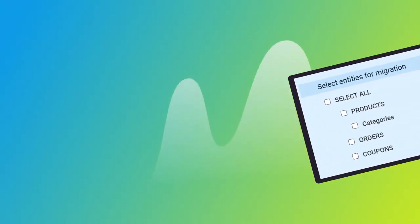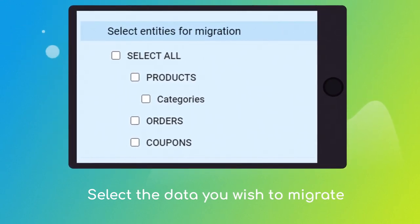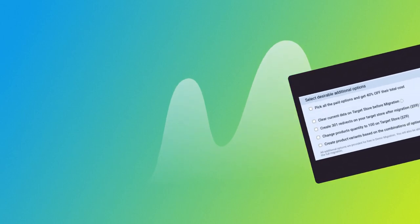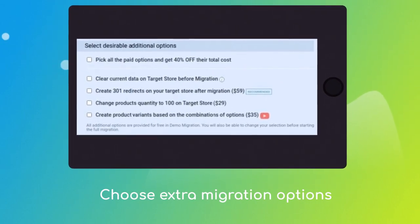Next, click the Choose Entities button to select the data types you'd like to migrate to Wix. And choose the additional options, like Create 301 redirects on Target Store, migrate images from the descriptions, or preserve order IDs, etc.